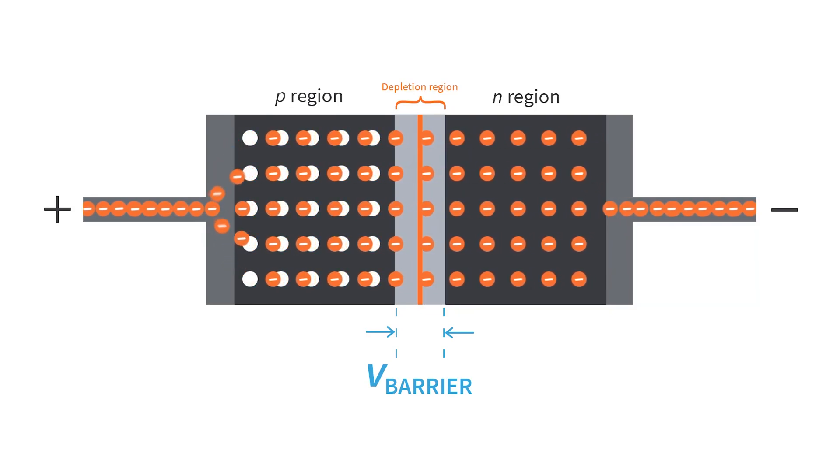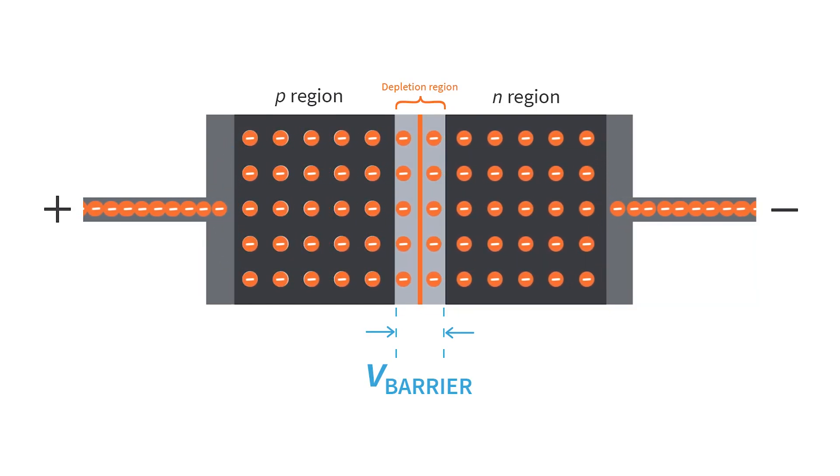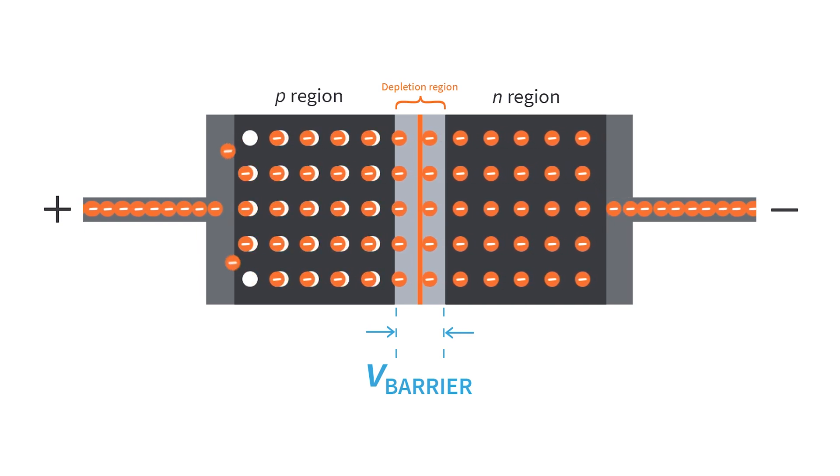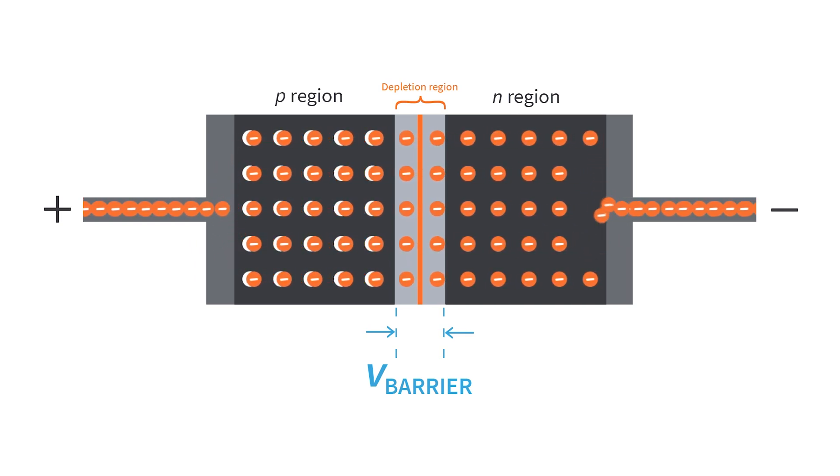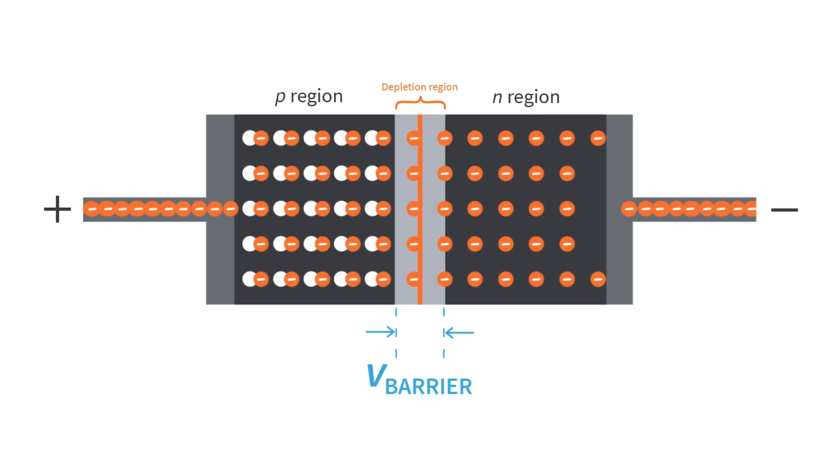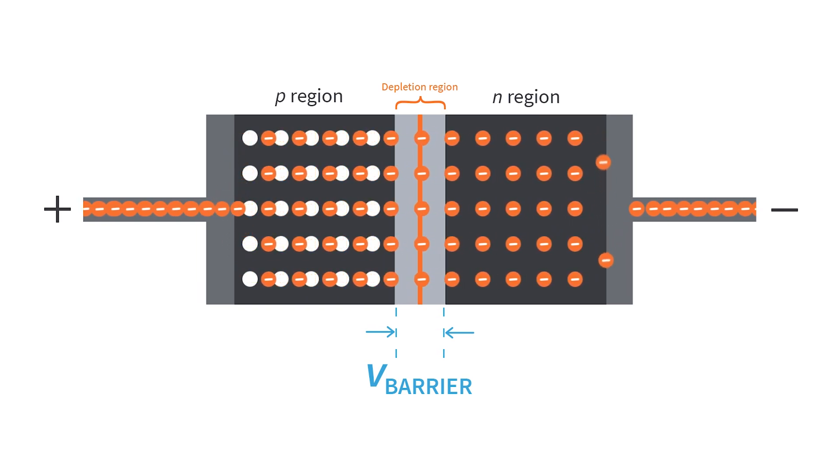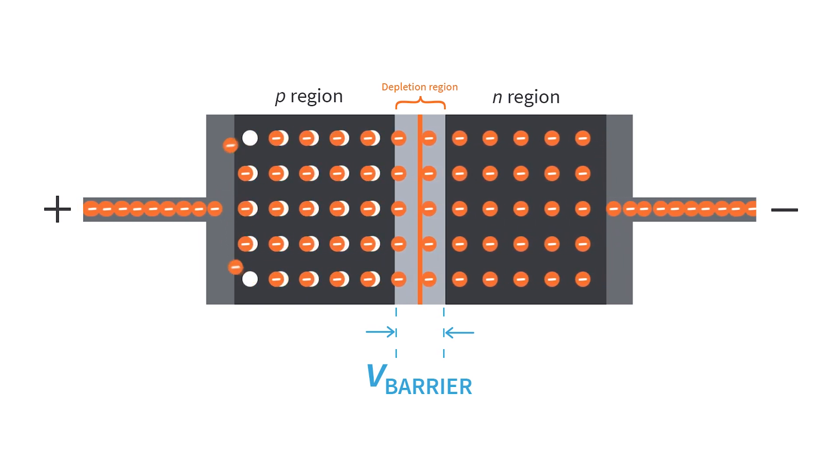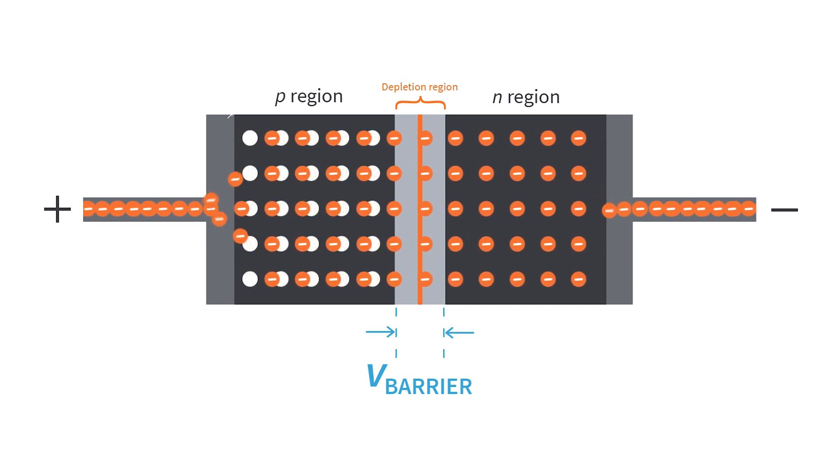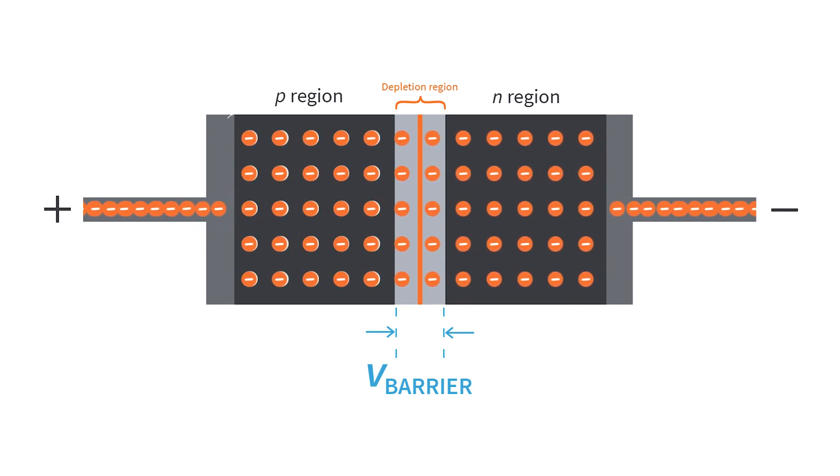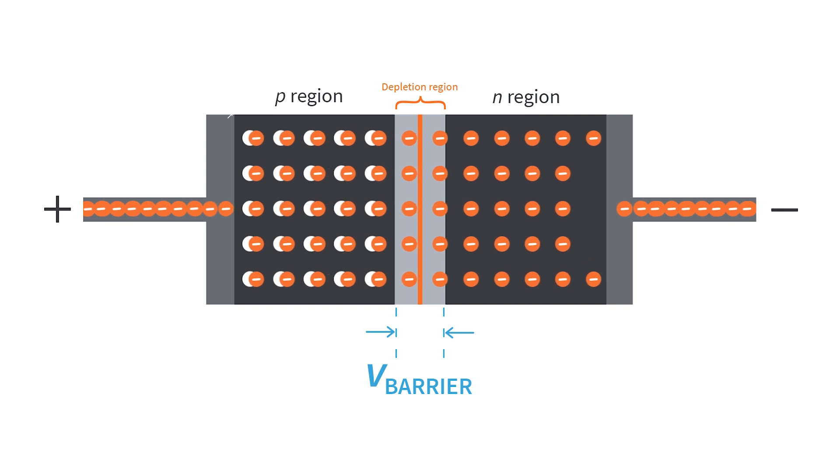This hole movement can be considered as the hole current, or we can also think that the hole current is produced because the holes provide a pathway so that the valence electrons can move through the P region. As the valence electrons leave the P region and flow through the external connection or the conductor, they leave holes behind in the P region. So there is also a continuous availability of these holes moving toward the PN junction.